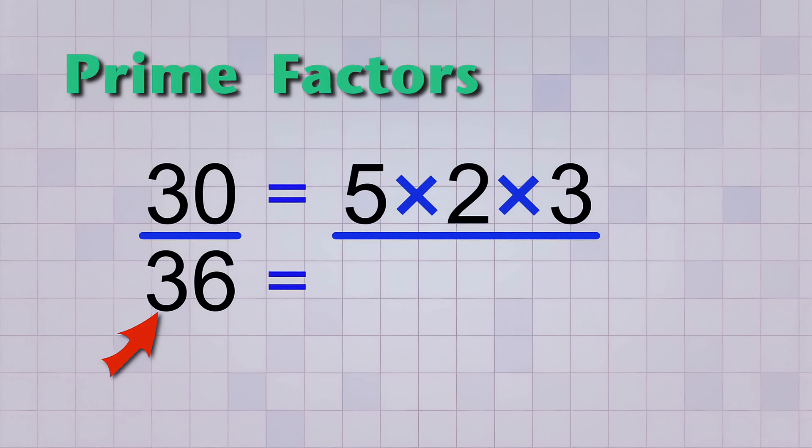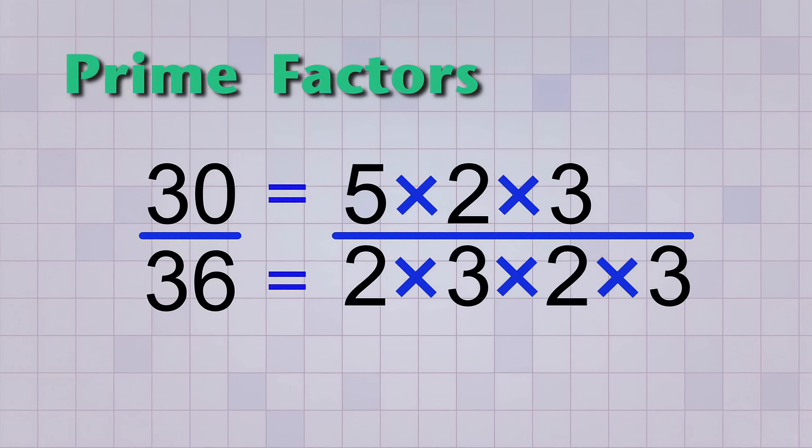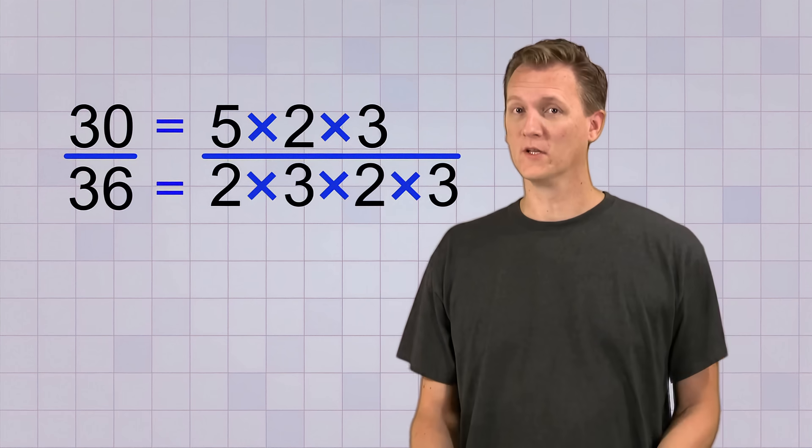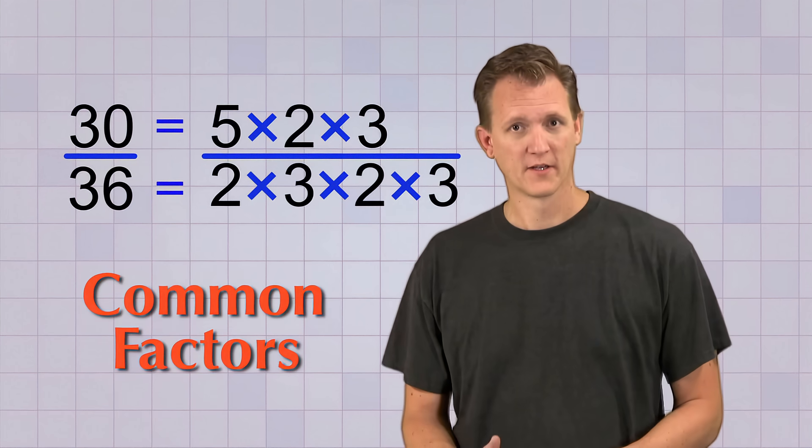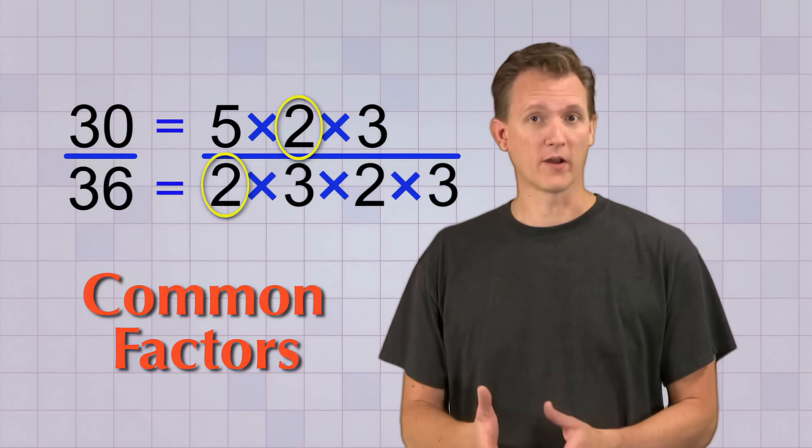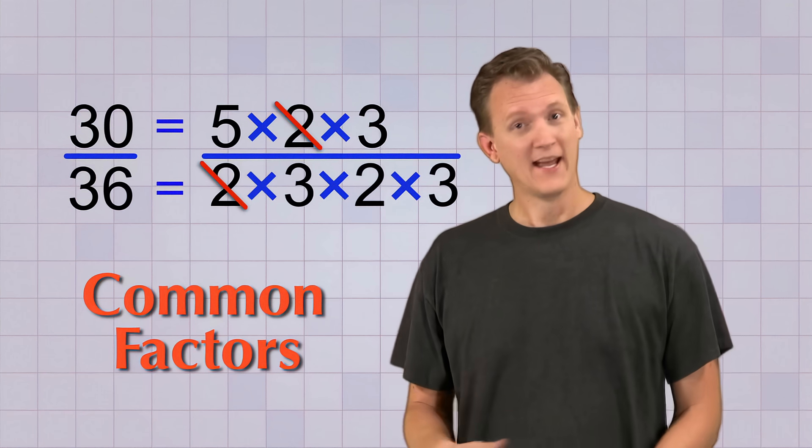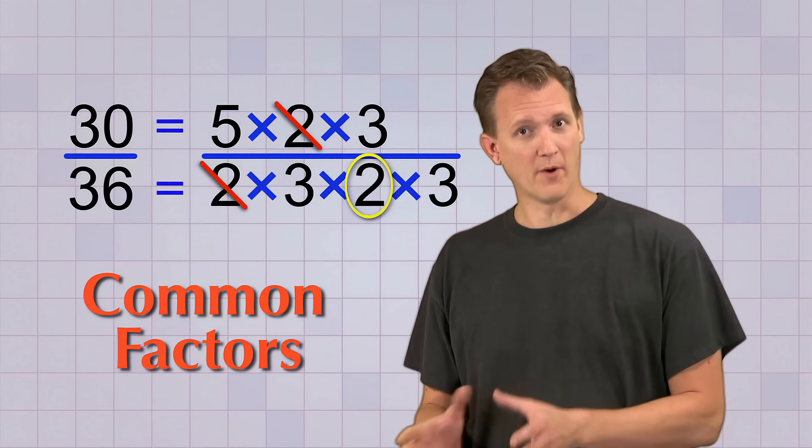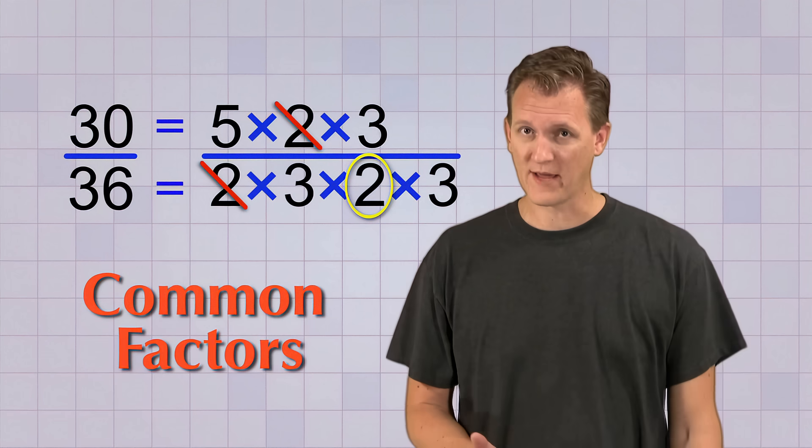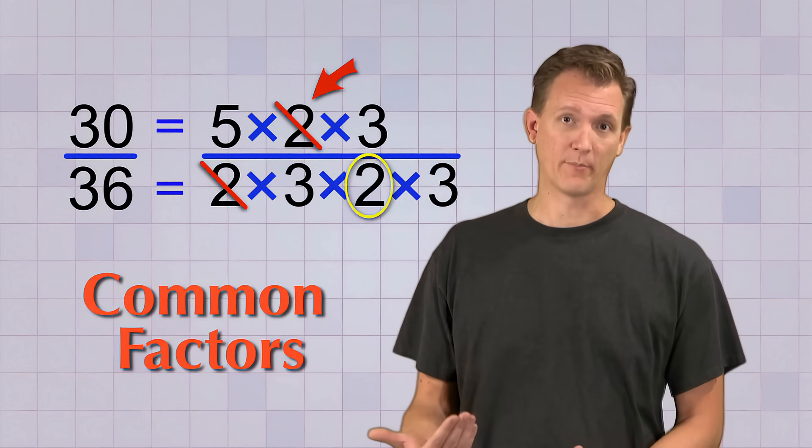Now the bottom number. 36 can be factored into 6 times 6. And each of those 6s can be factored into 2 times 3. So our bottom number becomes 2 times 3 times 2 times 3. Well, it looks like we do have some common factors. There's a 2 on both the top and bottom that will cancel each other out. And even though there's more than one 2 on the bottom, we can only cancel one of them out because there's only one 2 on top. Remember, you always have to cancel common factors as pairs.